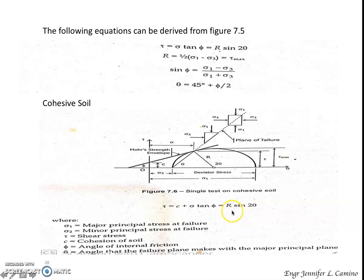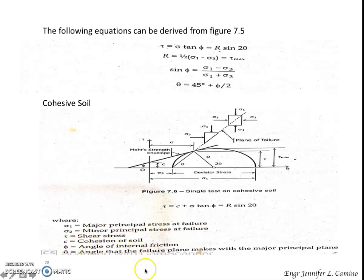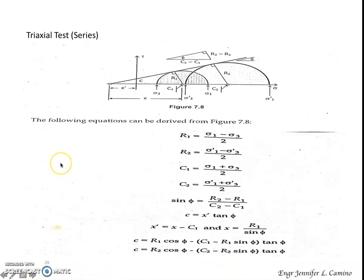The shear stress can also be equal to radius multiplied by sine of theta. We have the presence of sigma 1 and sigma 3, which refer to the major principal stress at failure and the minor principal stress at failure. Tau is our shear stress, C is the cohesion of soil, phi is the angle of internal friction, and theta is the angle that the failure plane makes with the major principal plane.